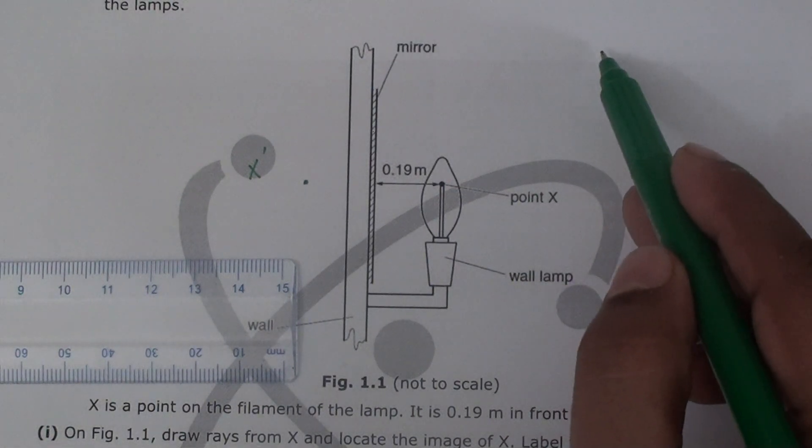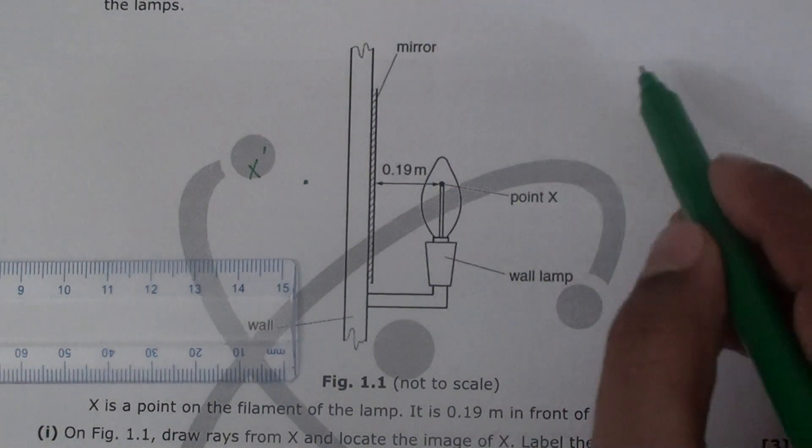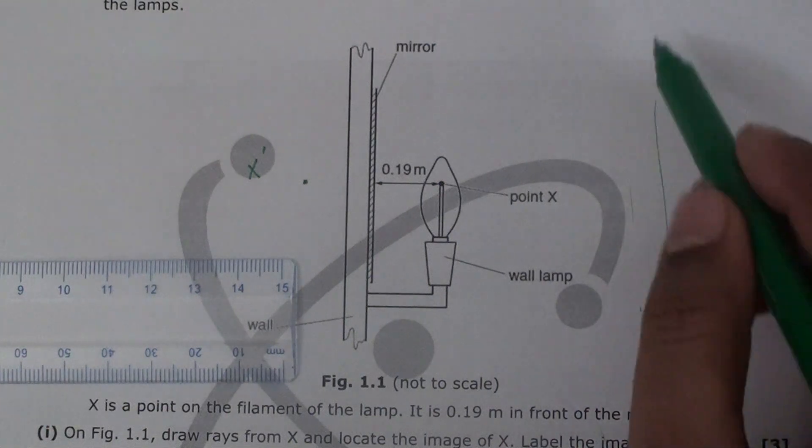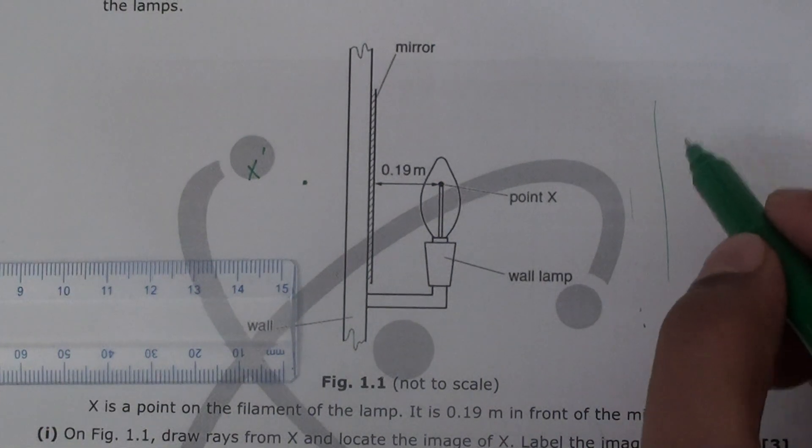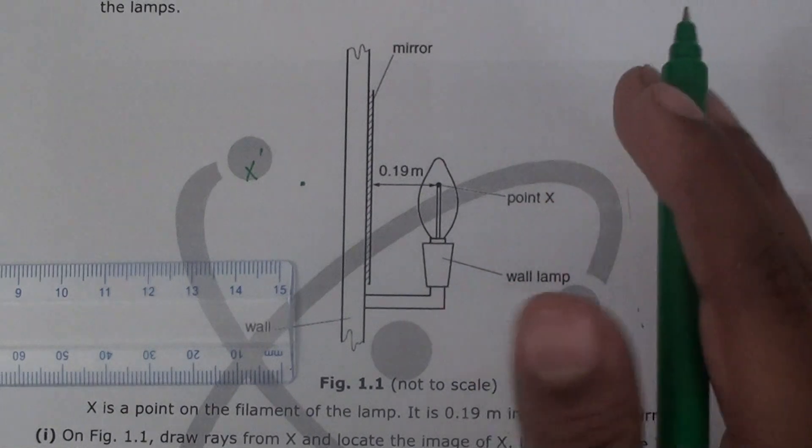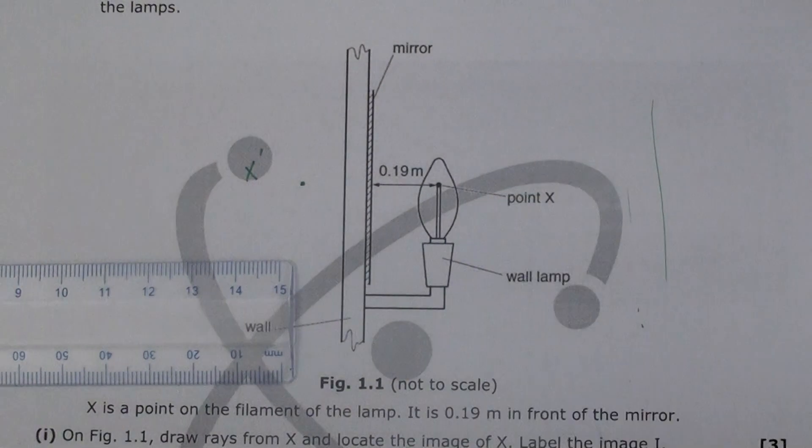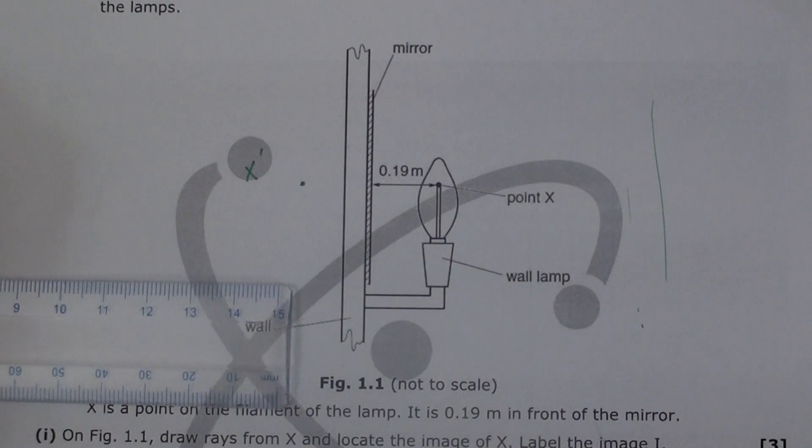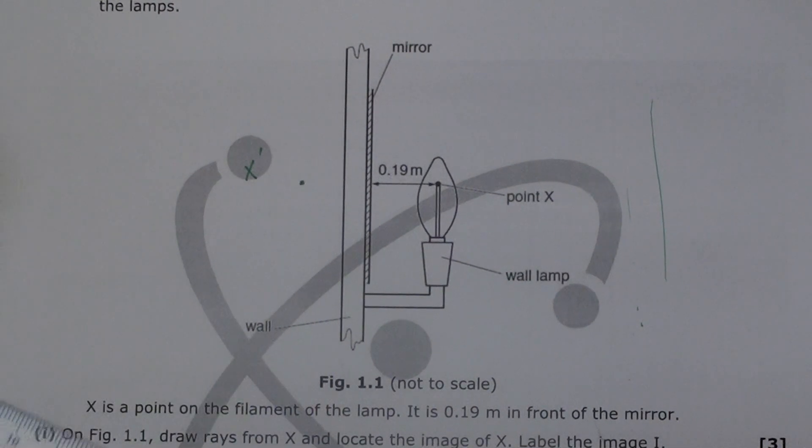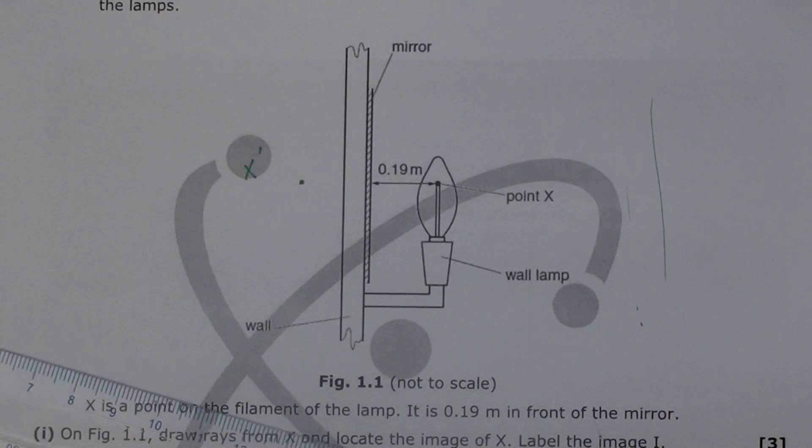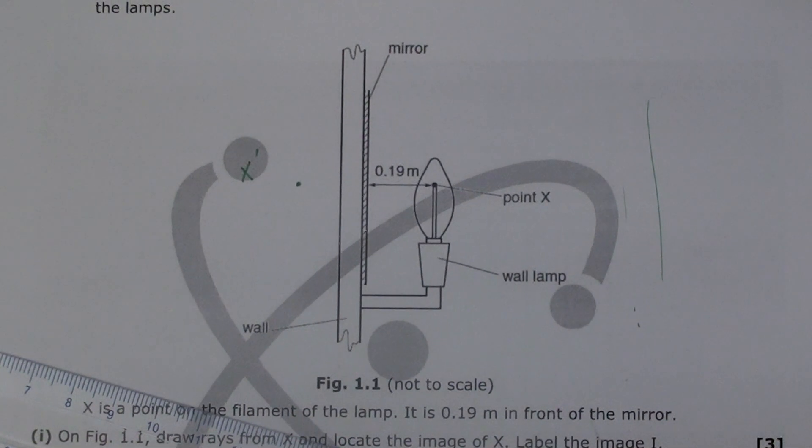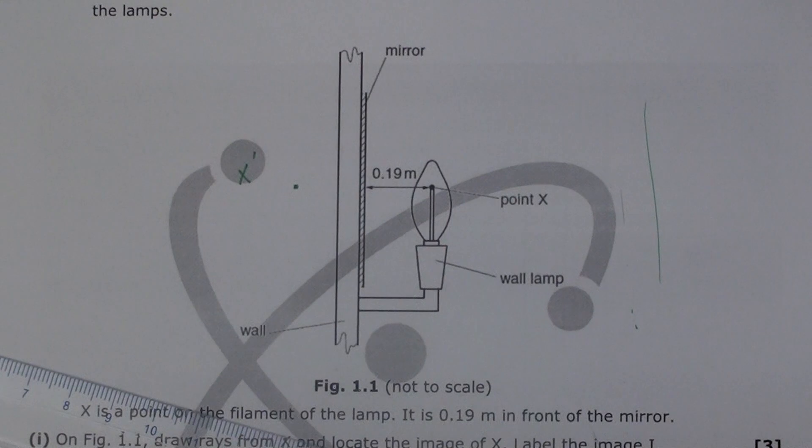This bulb is creating maximum impact, so we can pick any random points. Let's say from here till here someone on this side observes. If that's the case, we don't draw how it happens actually in real life. In reality it should be incident ray first, but for drawing we first draw reflected ray.